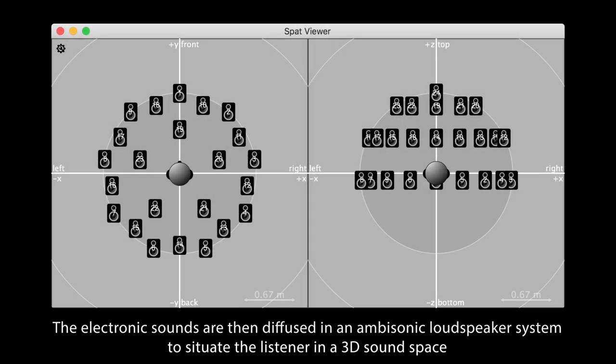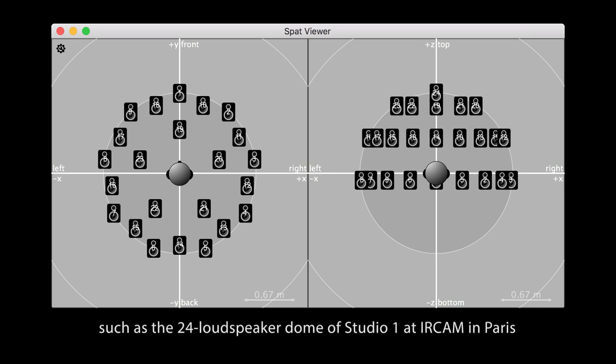The electronic sounds are then diffused in an ambisonic loudspeaker system to situate the listener in a three-dimensional sound space, such as the 24 loudspeaker dome of Studio One at IRCAM in Paris.